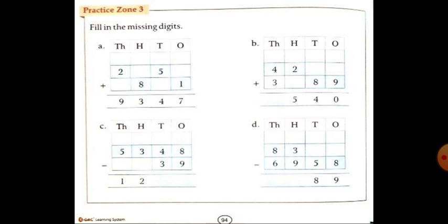And today our homework part will be in your concept book and workbook, practice zone 3. In your concept book, page number 94, fill in the missing digits.